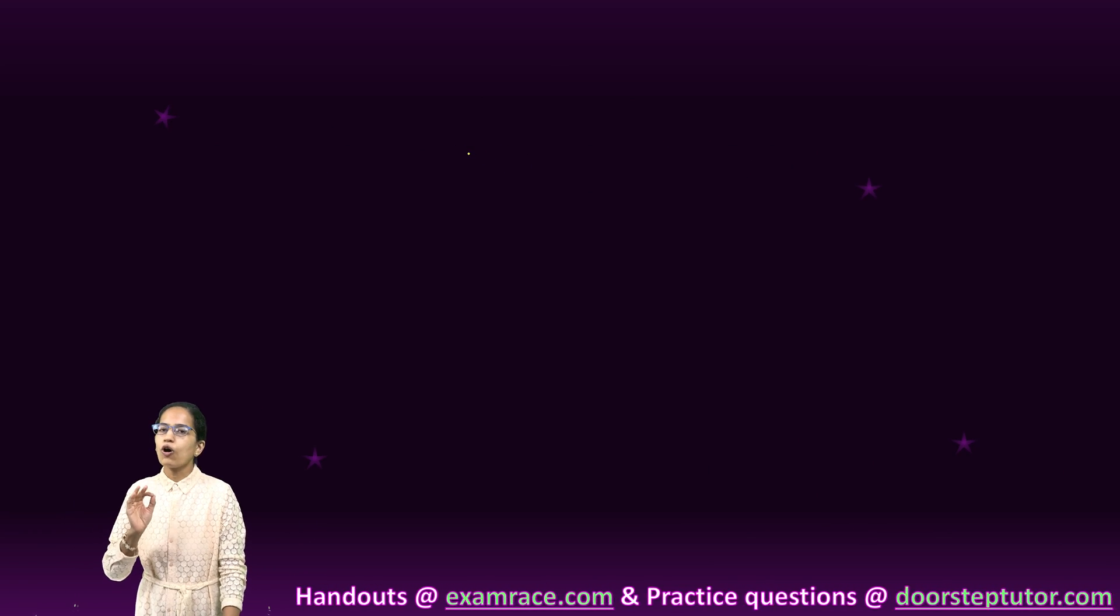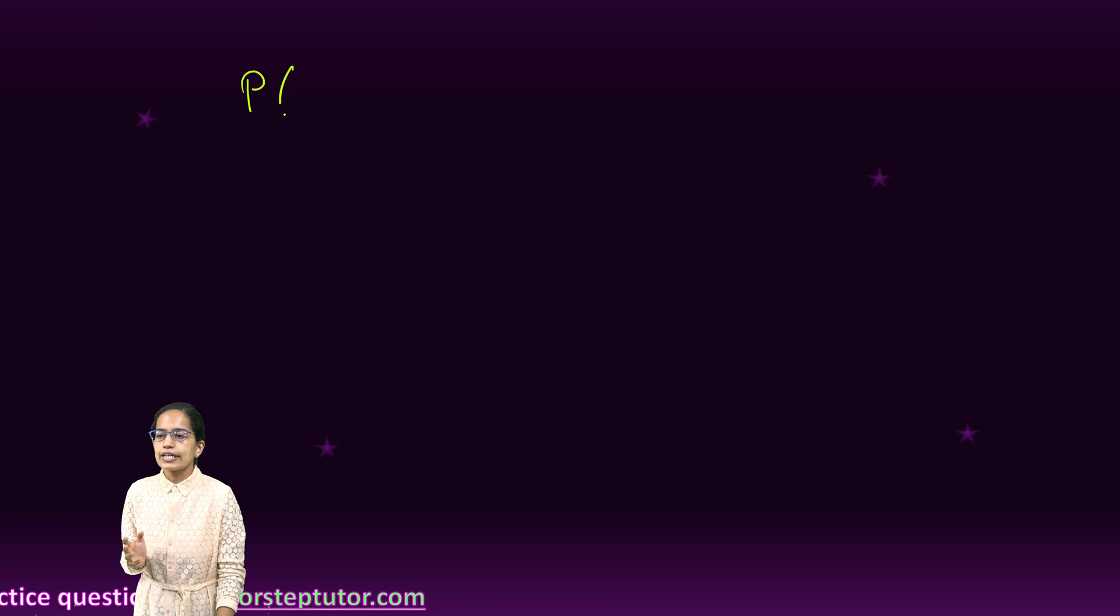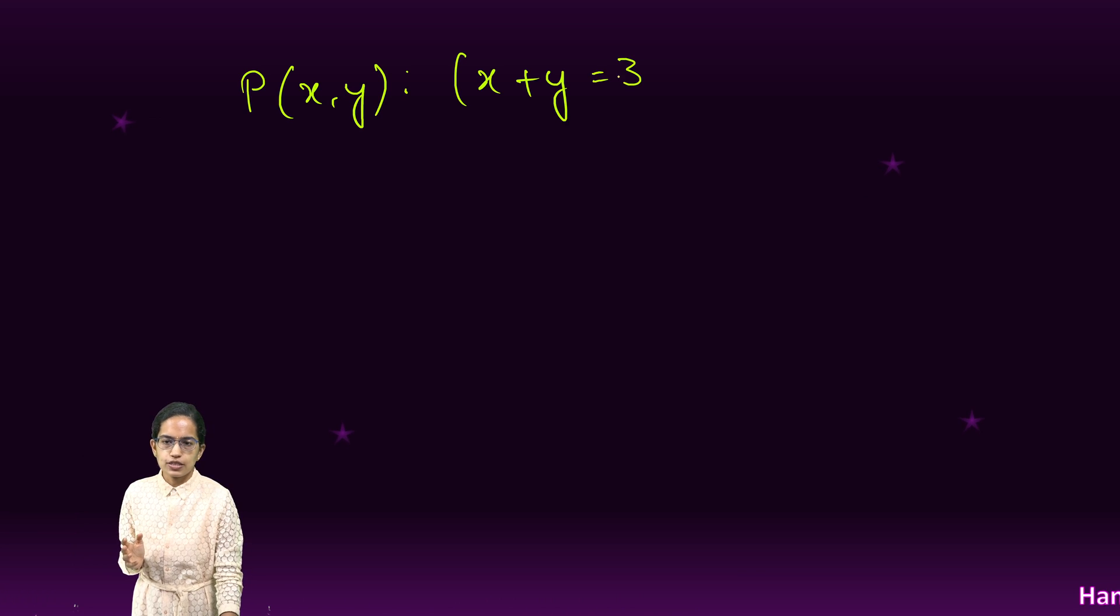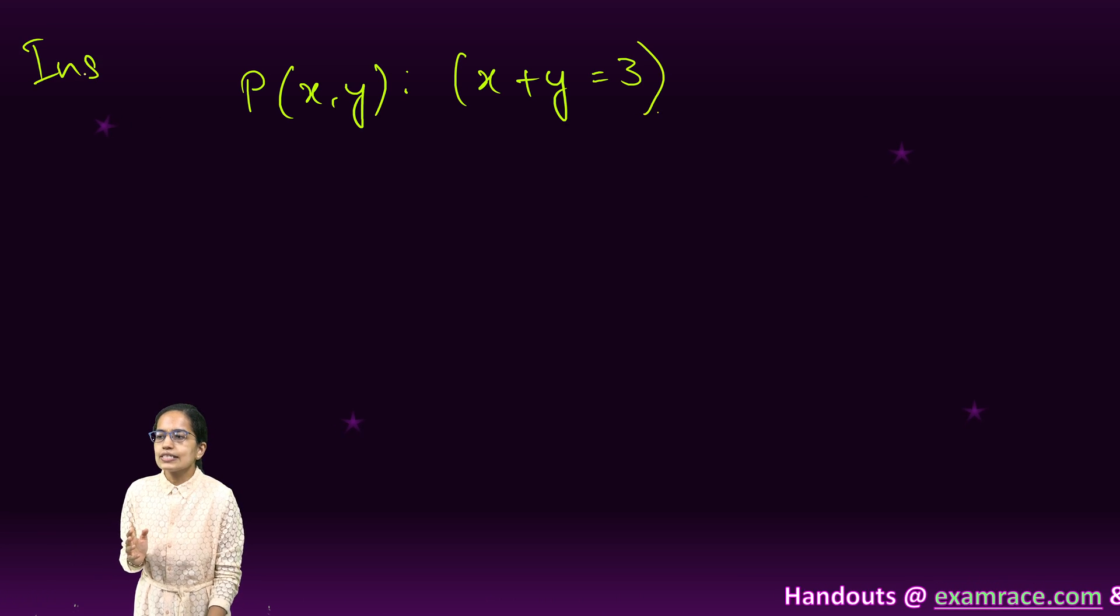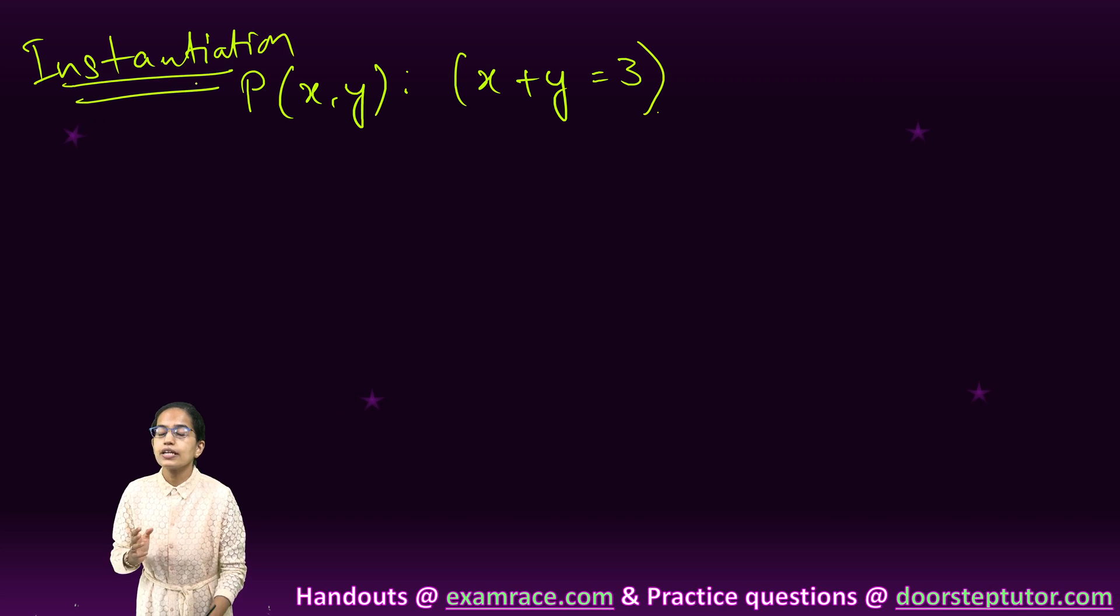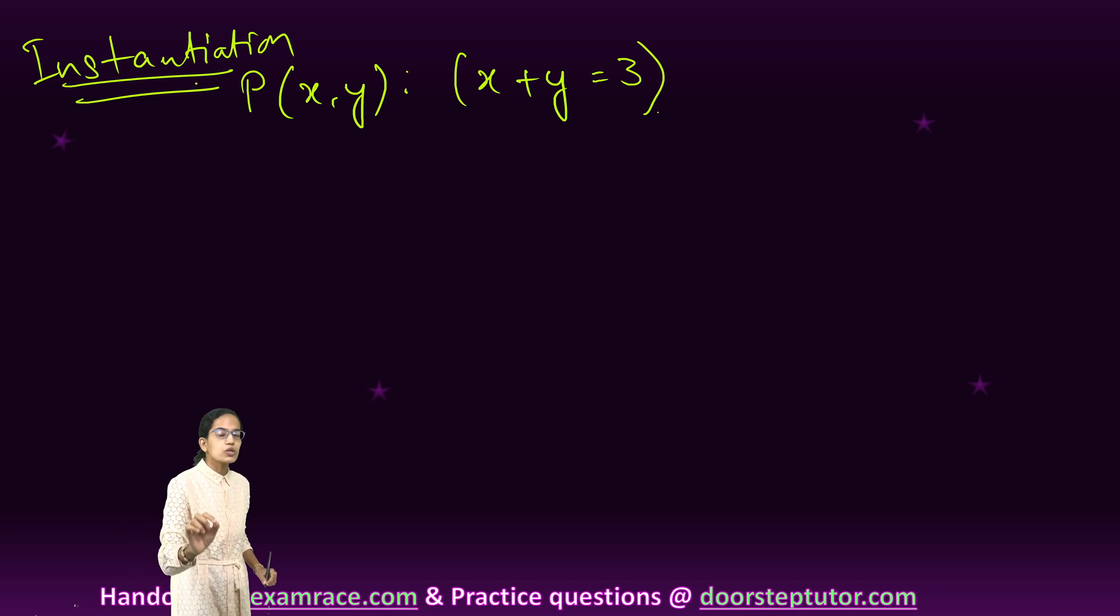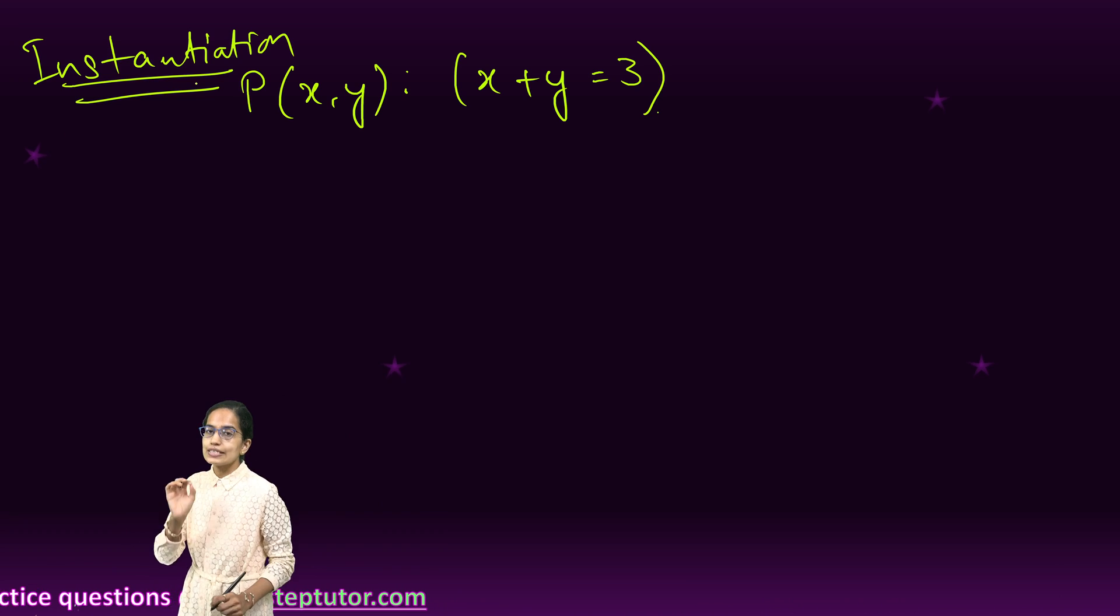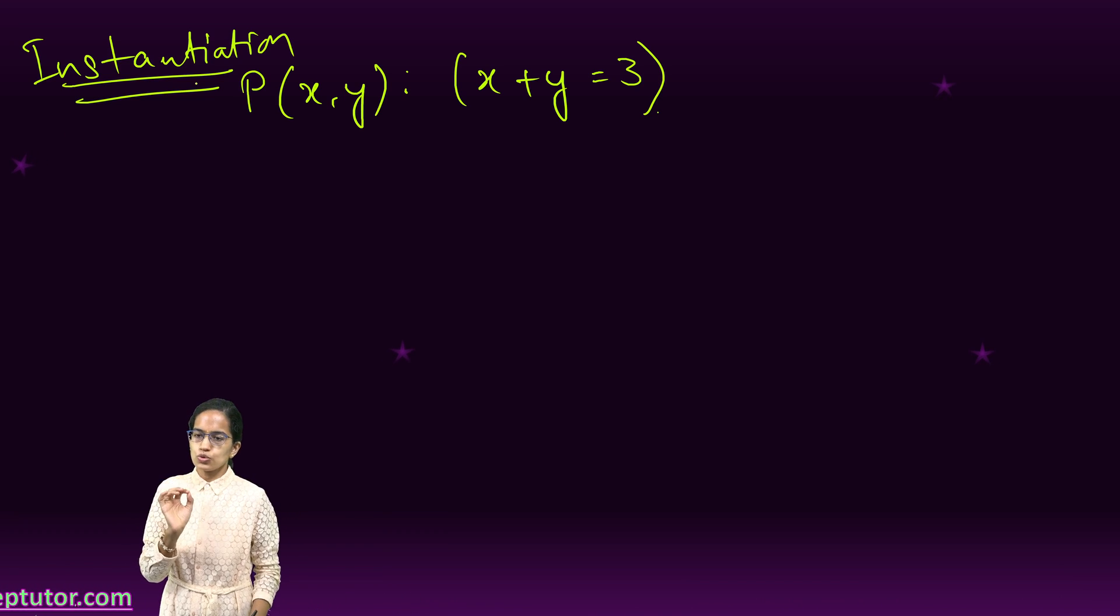In our last section, we understood what is predicate calculus. In predicate calculus, we use variables instead of constants. Let me take the same example from last class. I take P(x,y) which I represent as x plus y equals 3. Instantiation means I am trying to substitute the variables by constants and see whether that comes as true or false.